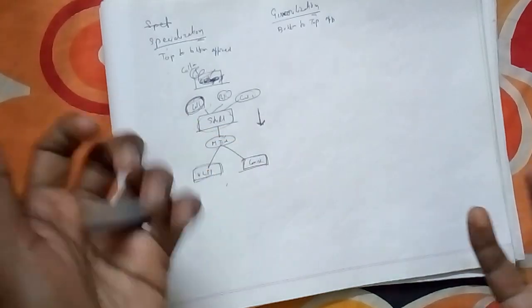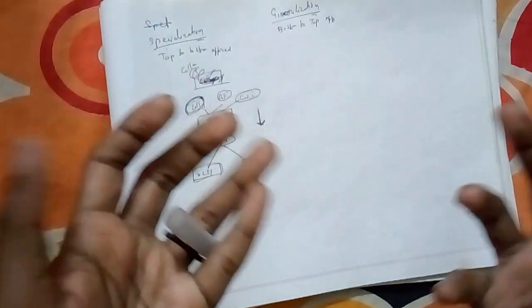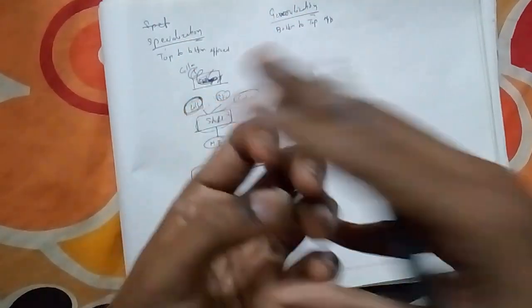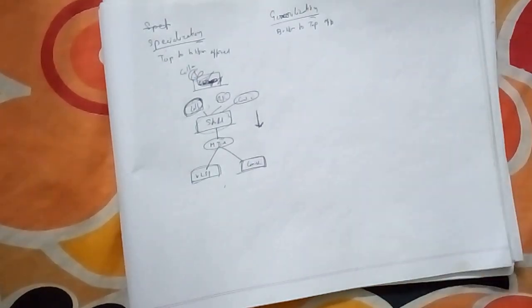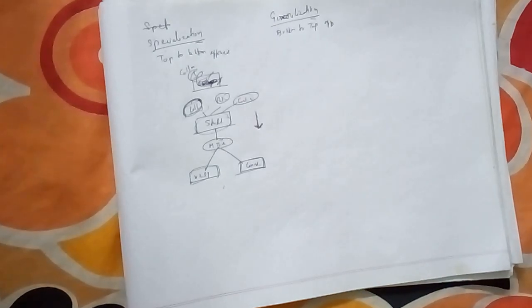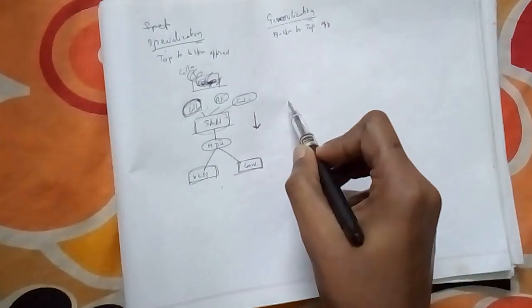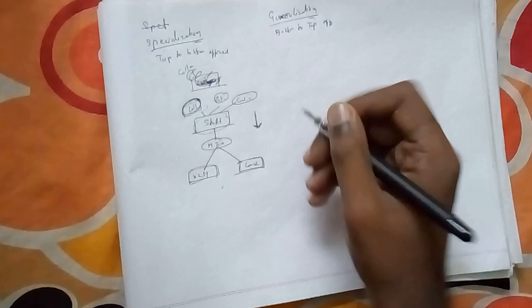What is generalization? It is the process of viewing a bunch of objects into a single class. There are a bunch of objects and you are gathering or viewing them into the same class — that is generalization. Let's take the same engineering example to make you understand.